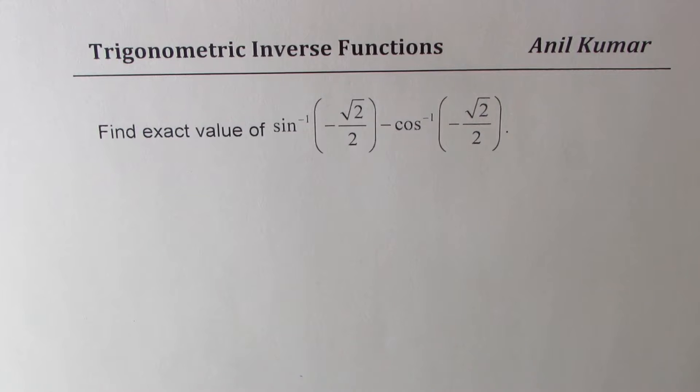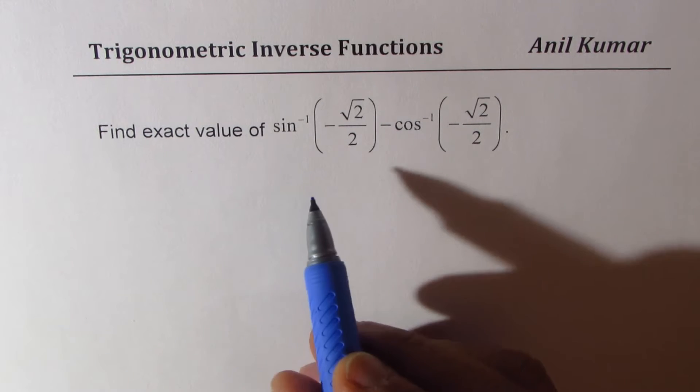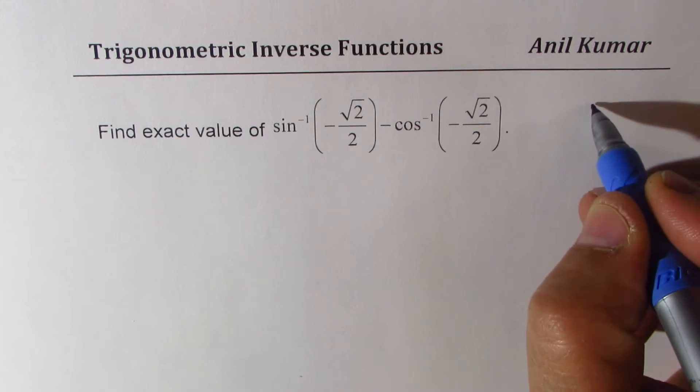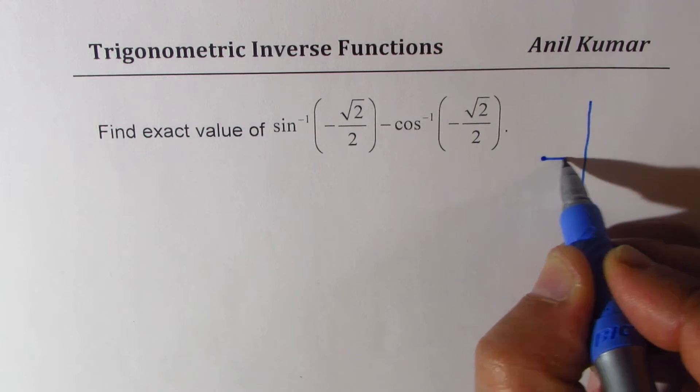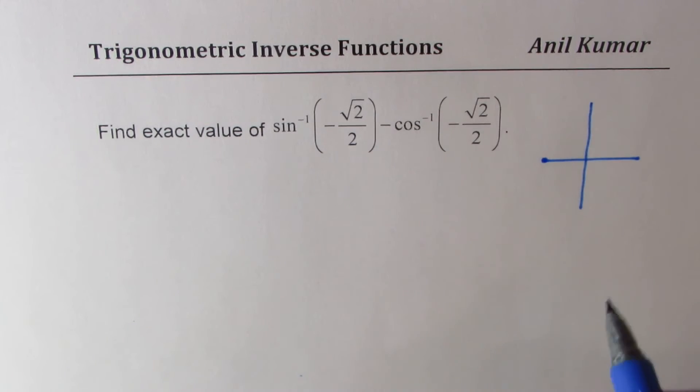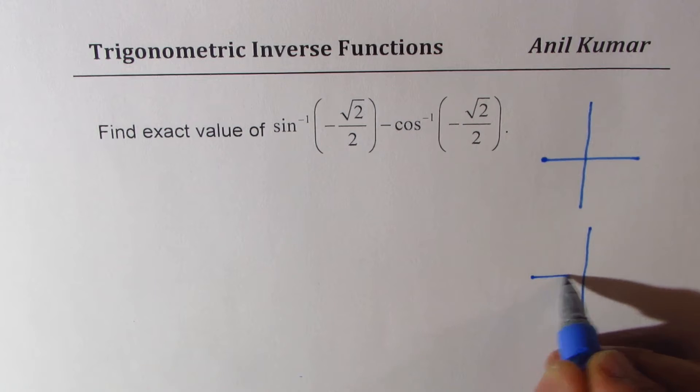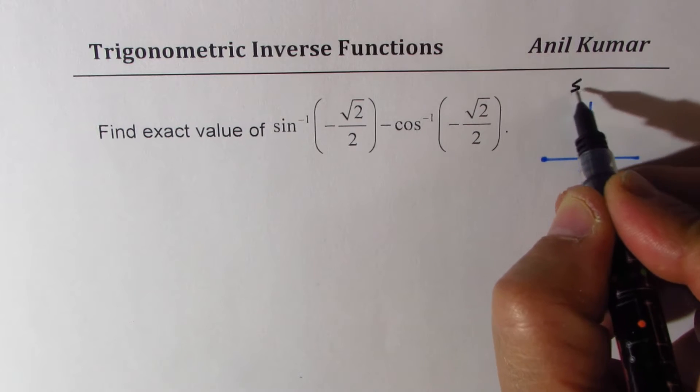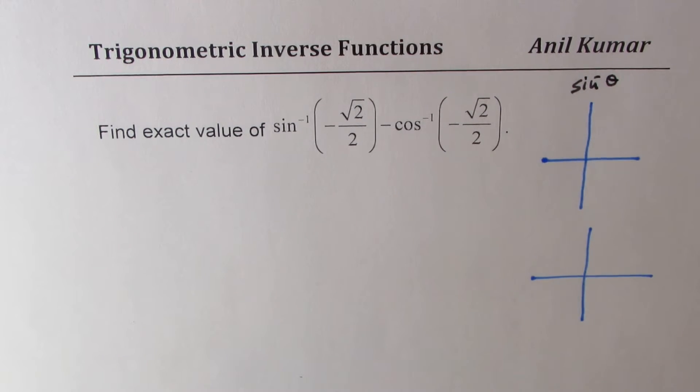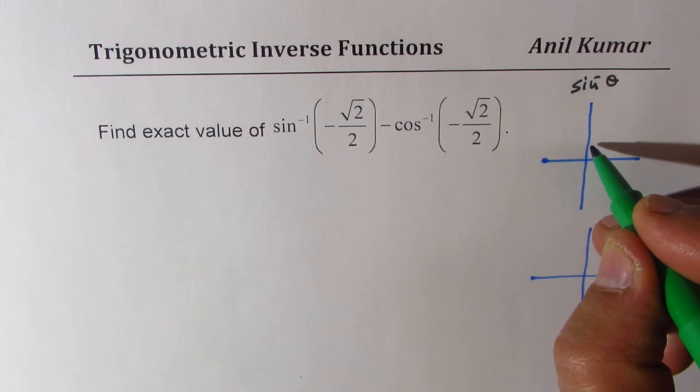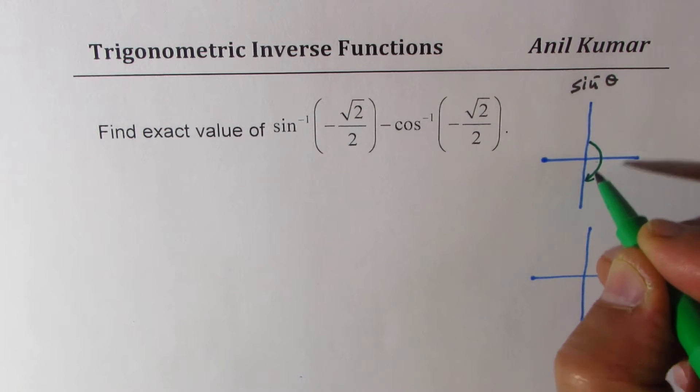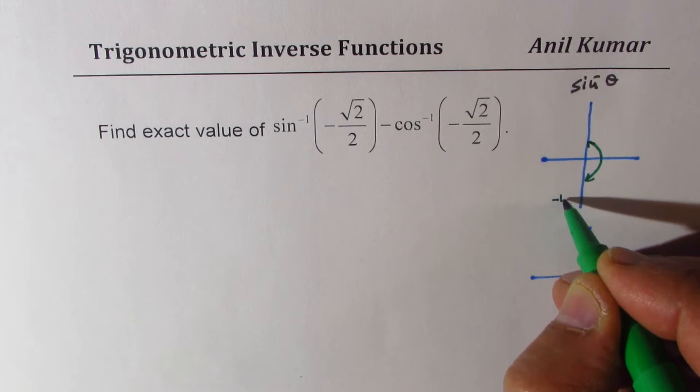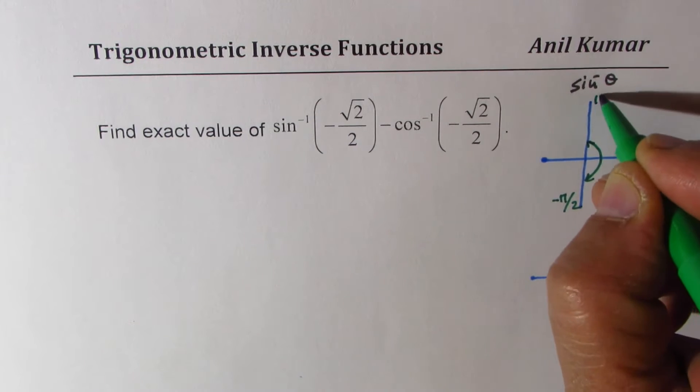Let us see how to solve such a question. Before starting, let's try to understand the domain of these inverse functions. So let me draw them separately. As far as the sine inverse theta is concerned, the domain for the function is in coordinates 1 and 4. So we are talking about minus pi by 2 to pi by 2.